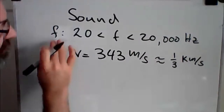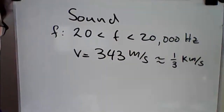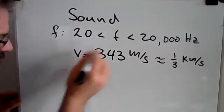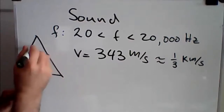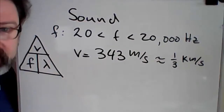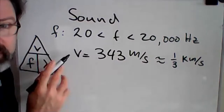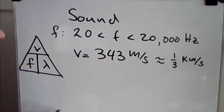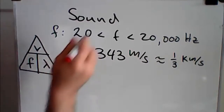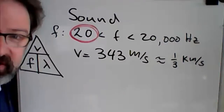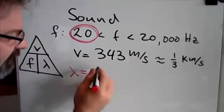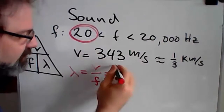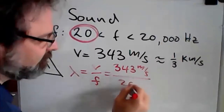Now we can quickly use that information to find the wavelength, because there's a relationship connecting the three. We've got v, f, and lambda — that's really important. If you know v and you know f, you can find lambda. For example, the smallest frequency is 20 hertz, so we can find the associated wavelength: lambda equals v divided by f, which is 343 meters per second divided by 20 hertz.